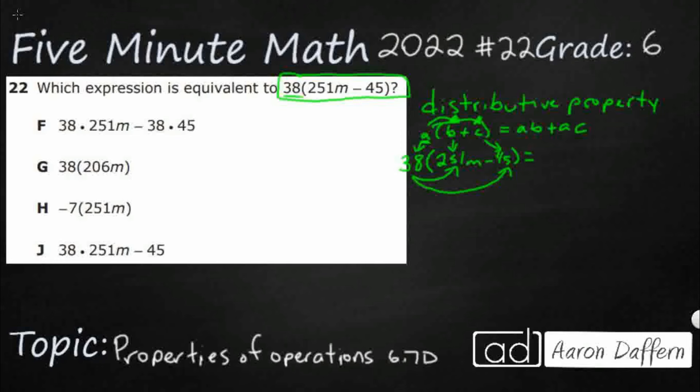So, I had my AB in my example. So, that's going to be 38 times 251M. So, that's my AB. This says plus AC, but that's because in the example it was an addition. I'm going to minus because it is a negative. AC. So, my A is 38 times, and then my C is 45.